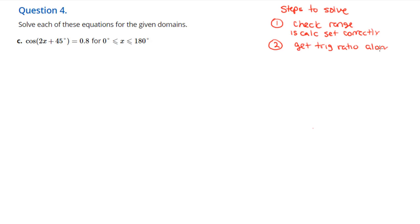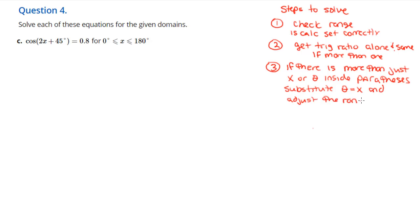We're gonna have to get the trig ratio alone, and if there's more than one, we have to get them to be the same. Number three: if there's gonna be something inside the parentheses with the X or the theta, then we're gonna substitute it out. We'll use that later but just get it out of the way for the beginning, and we also have to adjust the range based on that.